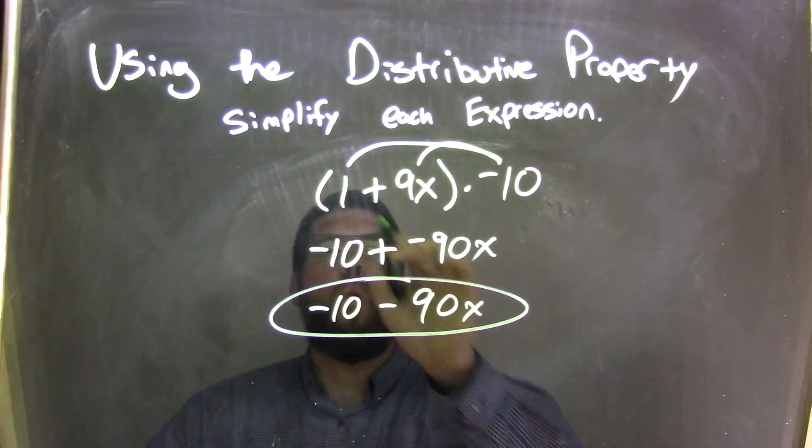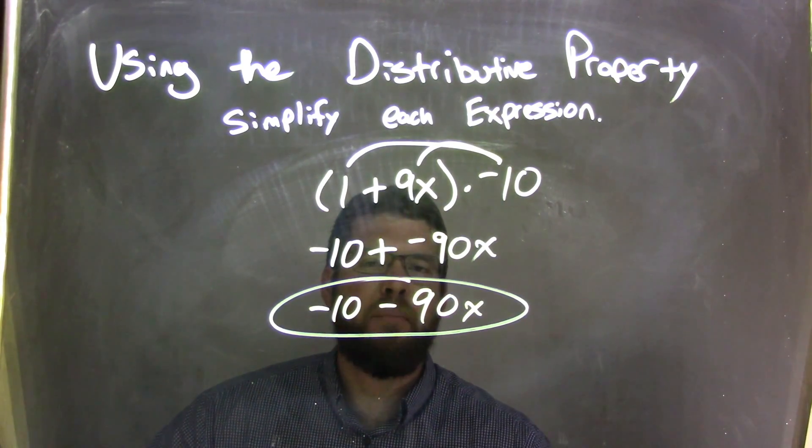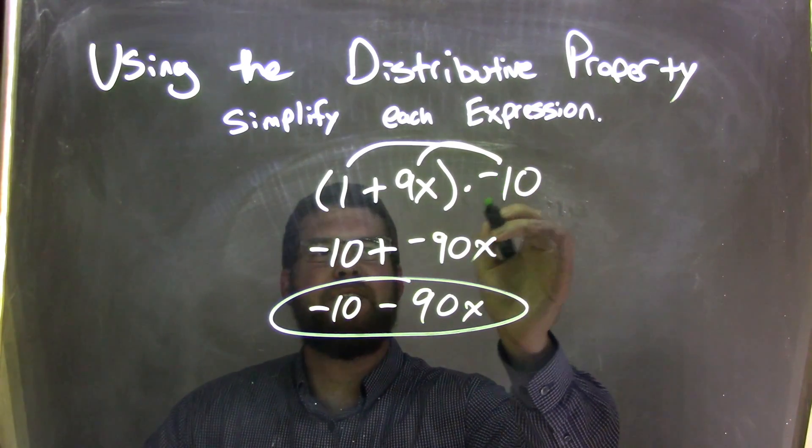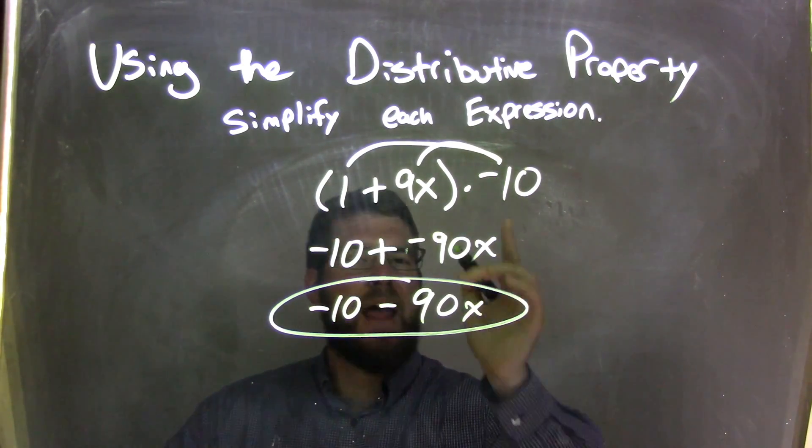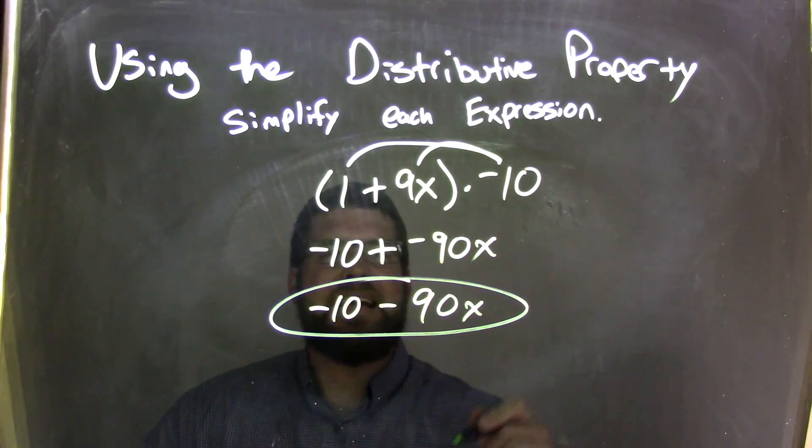So, again, let's recap. 1 plus 9x, they're not like terms. Can't combine them. Don't do anything with it. So now we have the multiplication on the outside, a negative 10. Remember, multiply by a negative 10, not subtraction. That is a common mistake I see. So let's multiply by negative 10.